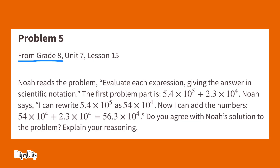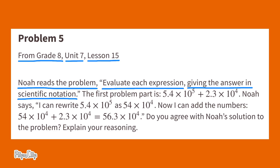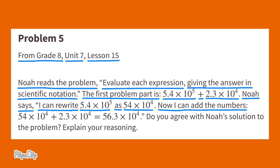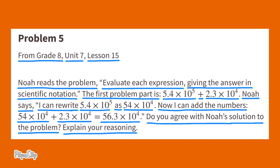Number 5, from 8th Grade, Unit 7, Lesson 15. Noah reads the problem: Evaluate each expression, giving the answer in scientific notation. The first part is 5.4 times 10 to the 5th plus 2.3 times 10 to the 4th. Noah says: I can rewrite 5.4 times 10 to the 5th as 54 times 10 to the 4th. Now I can add the numbers. 5.4 times 10 to the 5th equals 56.3 times 10 to the 4th. Do you agree with Noah's solution? Explain your reasoning.